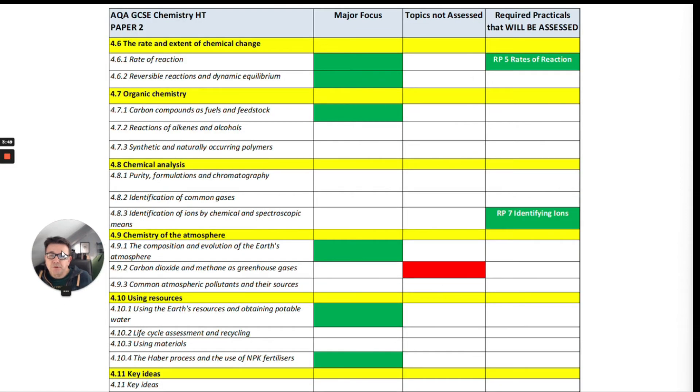Paper two. So again, not so balanced as paper one, you can see there's a big focus on rates of reaction, particularly the required practical at the top there. Organic chemistry, the carbon compounds as fuels, chemical analysis, not a major focus, but it could still be there, and particularly identifying ions. So I'm pretty sure you're going to need to actually learn aspects of this topic to help you with the required practical.